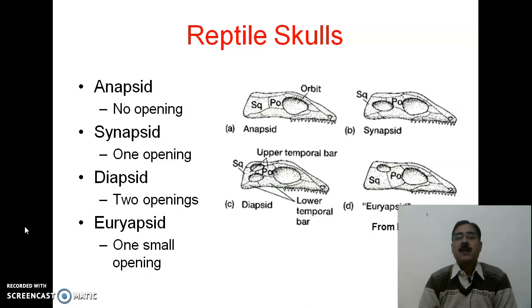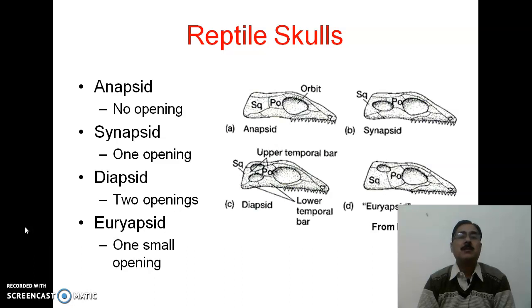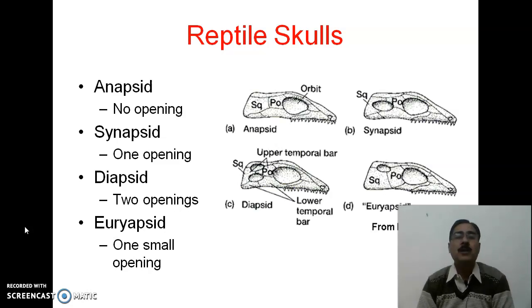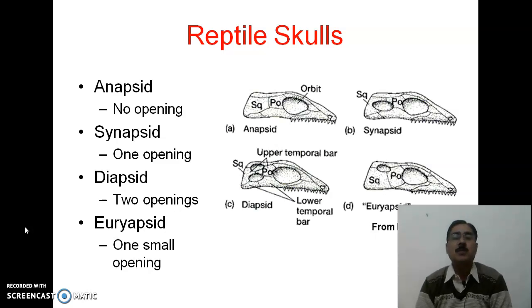There are various methods that have been adopted to classify the reptiles, but the most suitable method as given by Romer is on the basis of their skull. The reptilian skull has four basic types: anapsid with no temporal openings, synapsid with one opening, diapsid with two openings, and euryapsid with one smaller opening. Later we will also discuss parapsid, where there is also one opening.